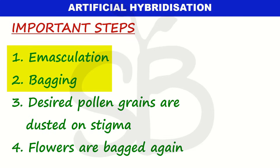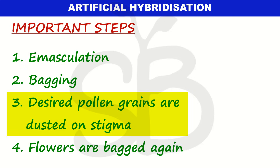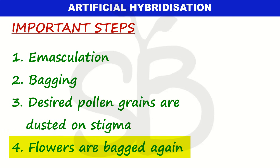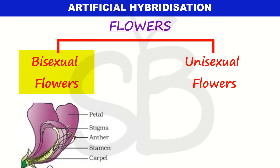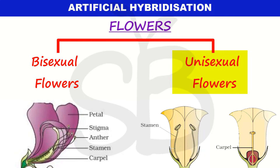In artificial hybridization, two steps are important: emasculation and bagging. Then, desired pollen grains are dusted on the stigma. Fourth, flowers are bagged again. In the case of flowers, two types of flowers are usually involved: bisexual flowers and unisexual flowers.